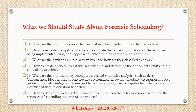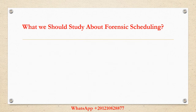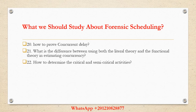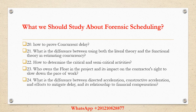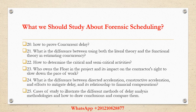19. How to determine the actual damages resulting from the delay or compensation for the expenses of extending the time of the project? 20. How to prove concurrent delay? 21. What is the difference between using both the literal theory and the functional theory in estimating concurrency? 22. How to determine the critical and semi-critical activity? 23. Who owns the float in the project and its impact on the contractor's right to slow down the pace of work? 24. What is the difference between directed acceleration, constructive acceleration, and efforts to mitigate delay, and its relationship to cessation? 25. Cases of study to illustrate the different methods of delay analysis methodologies and how to draw conclusions and compare them.